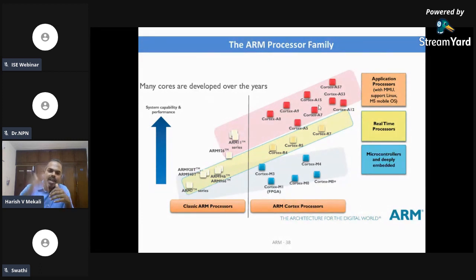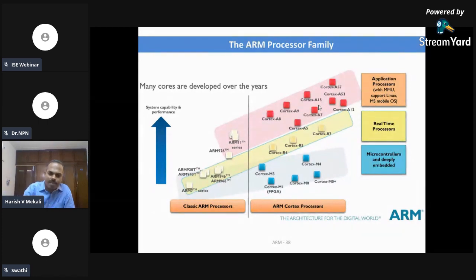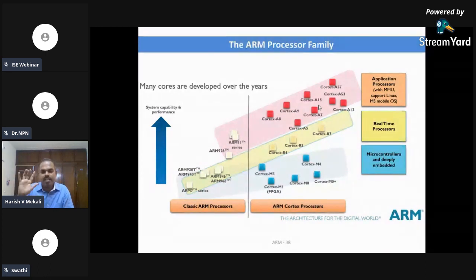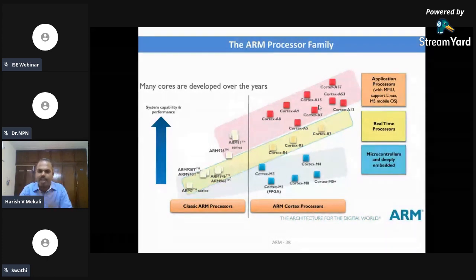ARM7, ARM9, and ARM11 are just an increase in complexity of the basic ARM7 family. For example, ARM7 has a three-stage pipeline, ARM9 has a five-stage pipeline, and ARM11 has a seven-stage pipeline. It is just an increase in complexity of the same fundamental architecture.